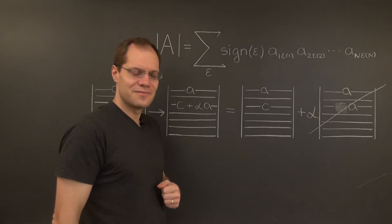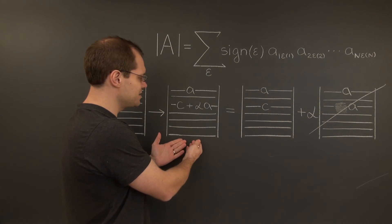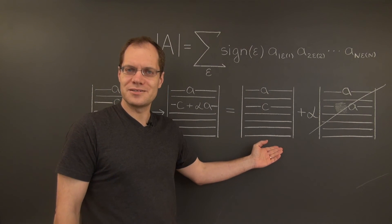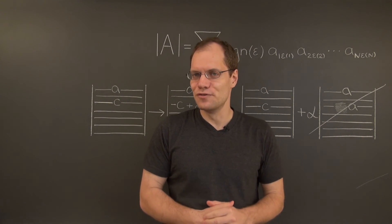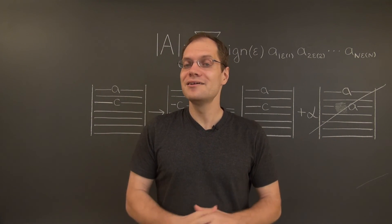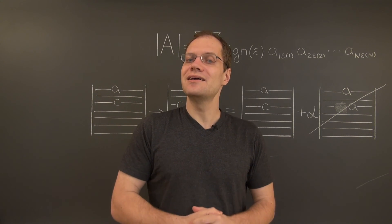So what we're left with is that the determinant of this matrix equals the original determinant. And that completes the proof. And now we're ready to calculate determinants by Gaussian elimination.